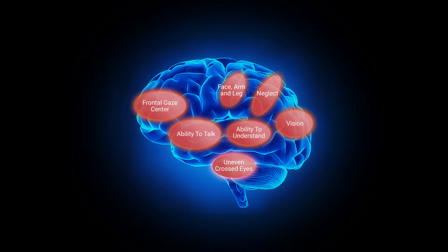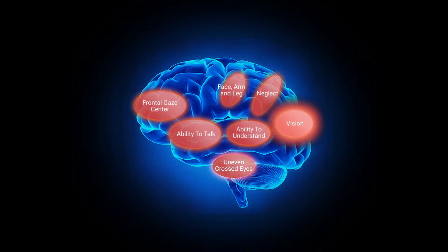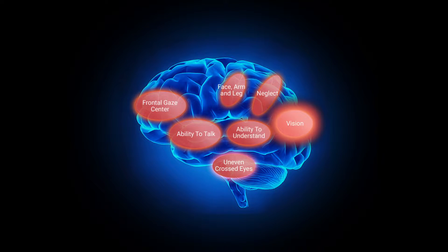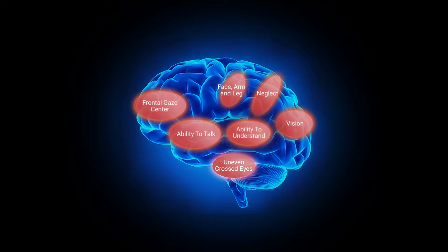Here's a brain diagram showing that all VAN symptoms can be mapped onto the brain. The frontal gaze center is up front. The ability to talk and name objects is also frontal. Motor function is frontal. Sensory processing — including the ability to understand commands and neglect, which involves integration of sensory information — is in the back of the brain. Vision is also sensory and located in the back. This is how every mammal's brain is organized.